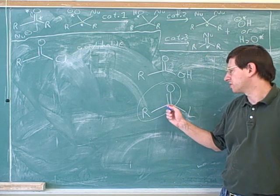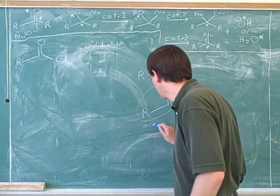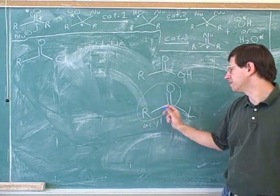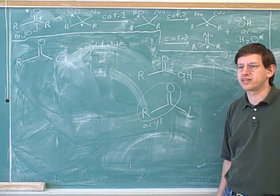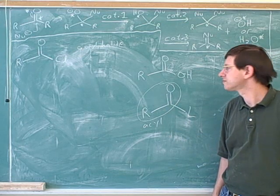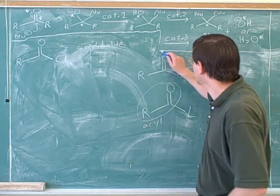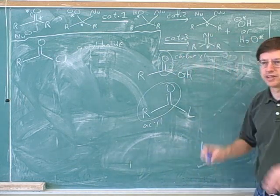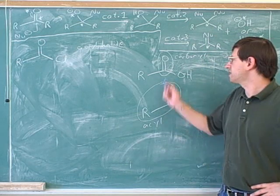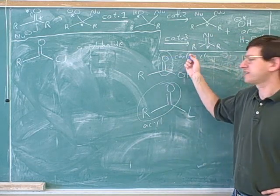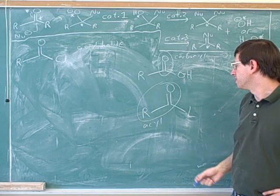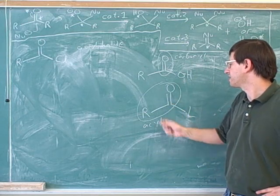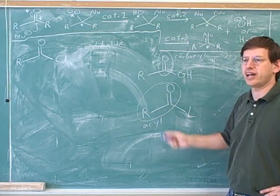By the way, this group right here is called an acyl group. If you just consider the carbon chain and the carbonyl as a group, that's considered an acyl group. There's lots of little names for the different pieces here. If we just consider the carbon-oxygen double bond, that's a carbonyl. But if we consider the carbon-oxygen double bond connected to a carbon chain, that's considered an acyl group.